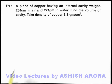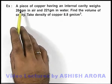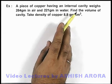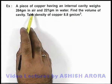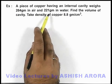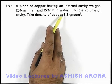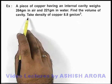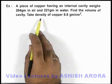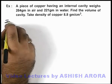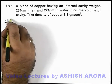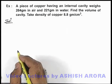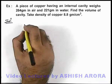In this example, we are given that a piece of copper having an internal cavity weighs 264 grams in air and 221 grams in water. We are required to find the volume of the cavity. The density of copper is given as 8.8 grams per centimeter cube.